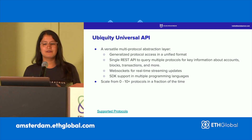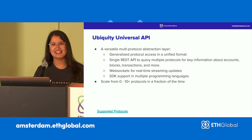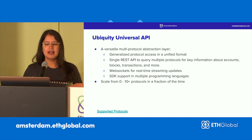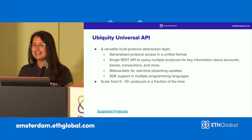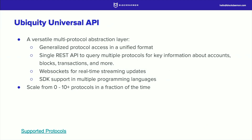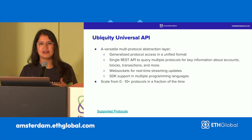Our universal API is a versatile multi-protocol abstraction layer — a generalized protocol that allows access in a unified format. It's a single REST API that allows you to query multiple protocols. You have WebSockets for real-time streaming updates and an SDK that supports multiple programming languages. You can scale from zero to over 10 protocols in a fraction of the time it would take to do this alone. Ubiquity makes it easy to transfer knowledge across chains and work with data across the board with one singular frictionless experience.